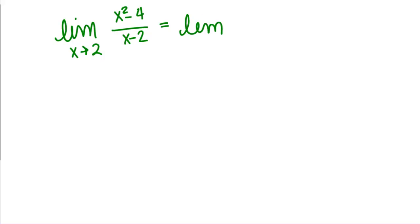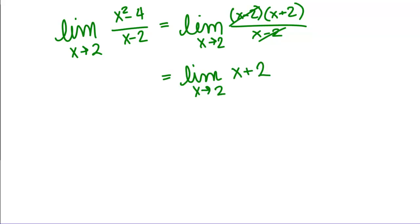So when doing limits, we are allowed to do this simplification of canceling a factor out of the top and the bottom. So we can say that the limit as x goes to 2 of our original function is the same as the limit as x goes to 2 of our new reduced function x plus 2.